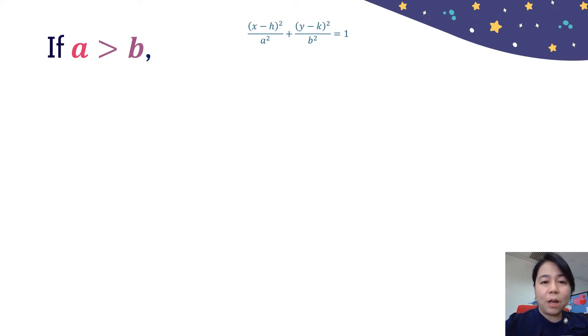When we have the formula of the ellipse, we need to check the value of A and B. If A is greater than B, then to find the value C, C² = A² - B², greater value minus the smaller value.